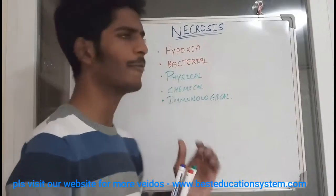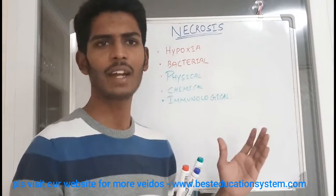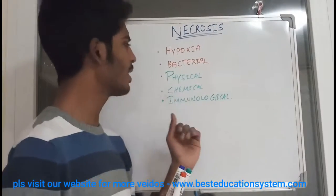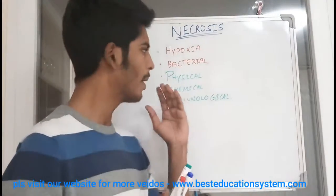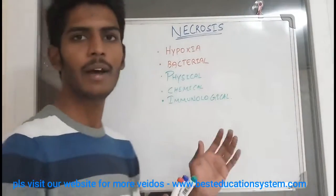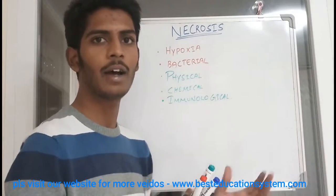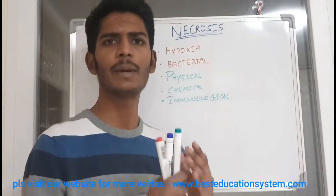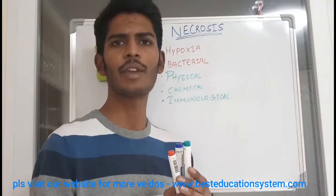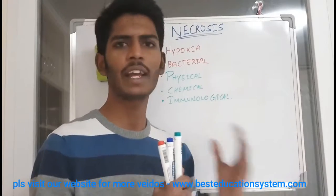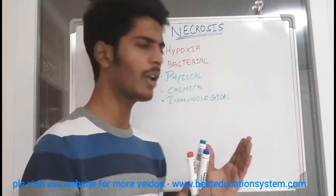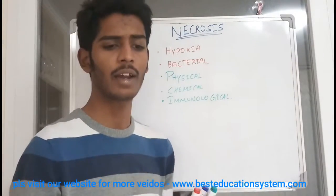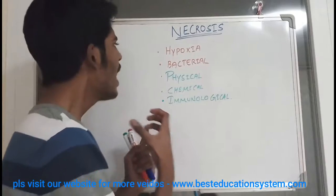What about physical? Physical is, for example, radiation — a physical factor that can cause localized cell death. And chemical — there are many chemical agents which influence our body's cell function and cell death. And immunological: our body gives many reactions to external organisms as an immunological system, and during that time it can cause localized cell death in a particular organ.